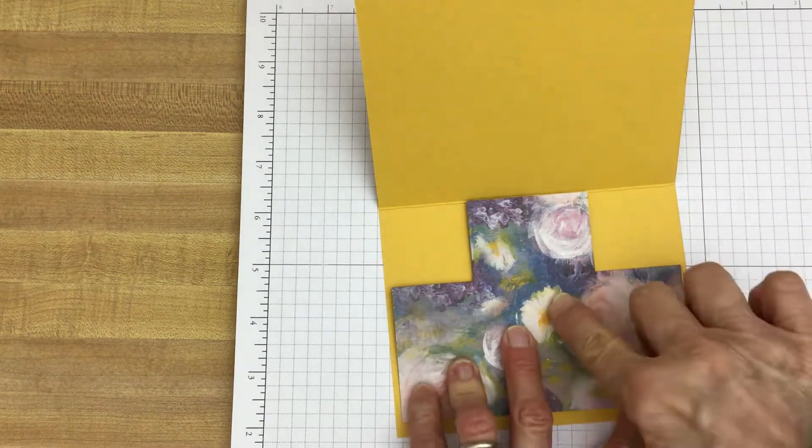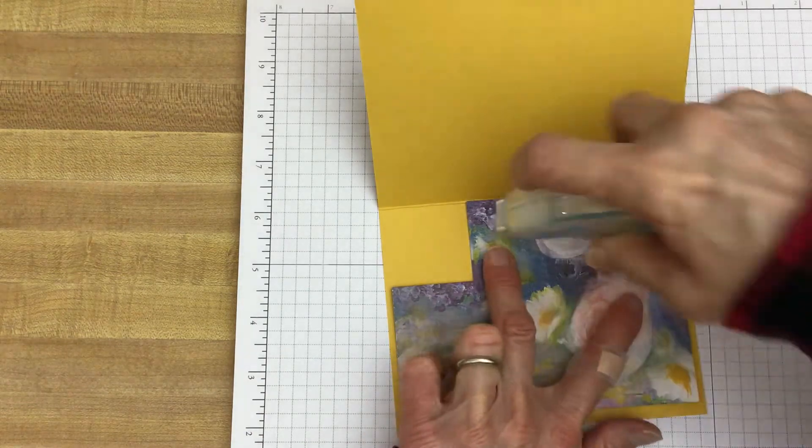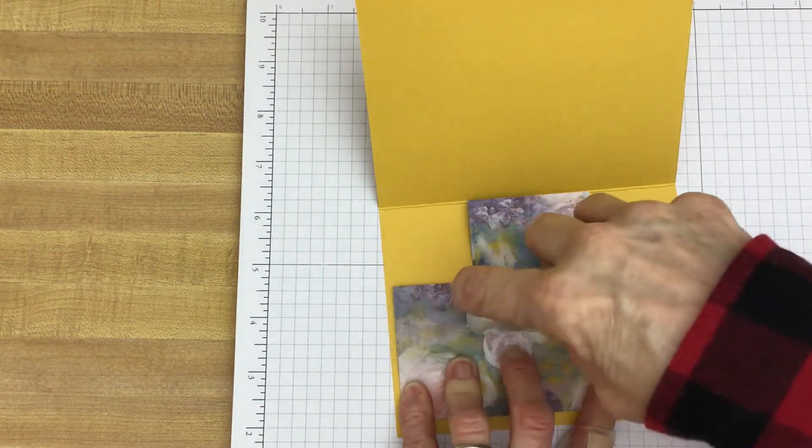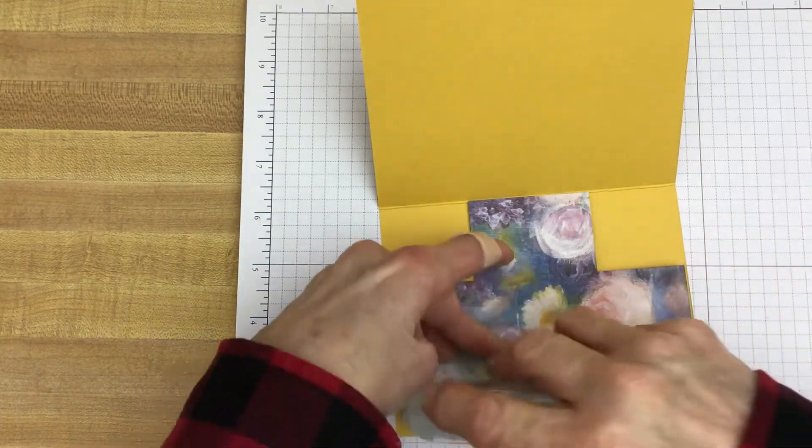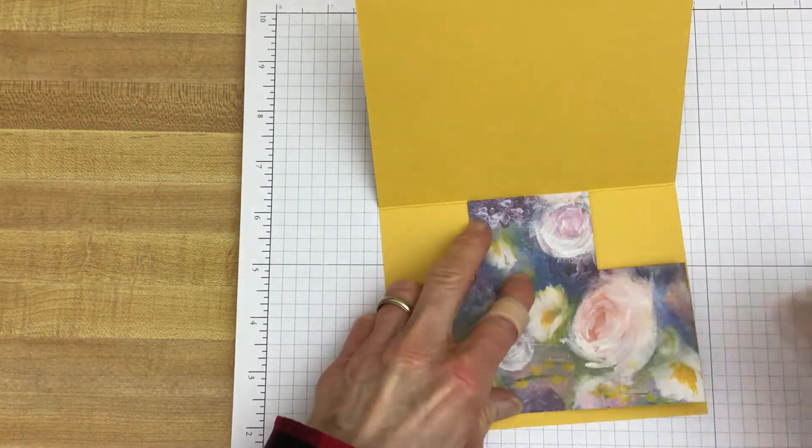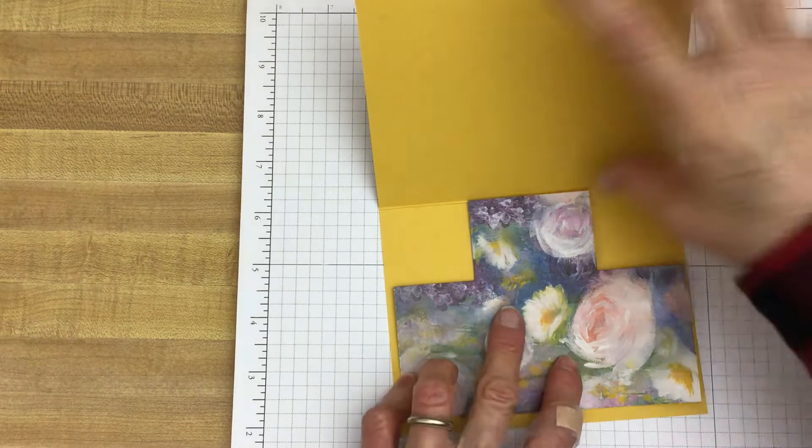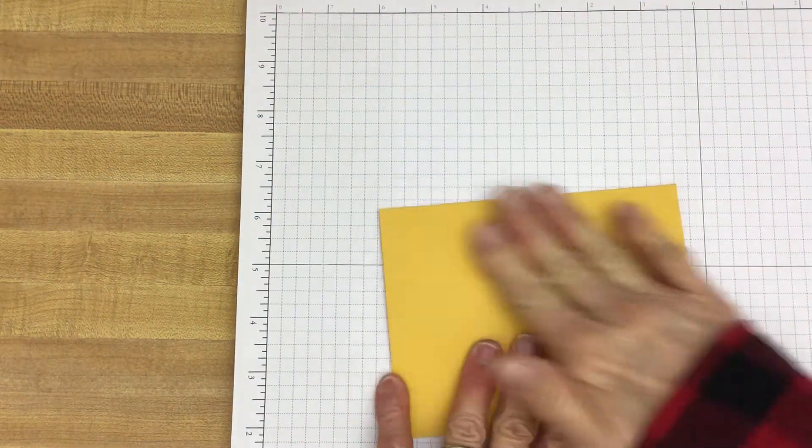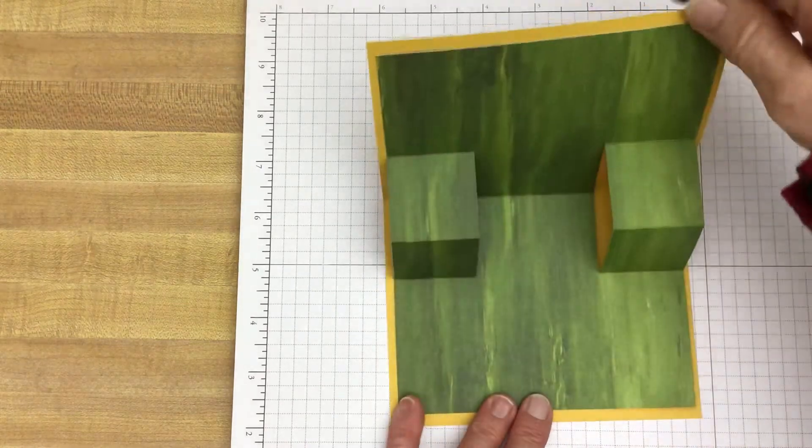And make sure that this edge bumps right up against the fold of your card. And you kind of want to center this in there. And then you just put some adhesive down. And then what I do, just kind of hold it in place. Fold the card. There you go.